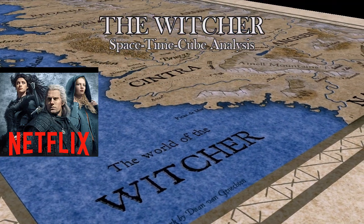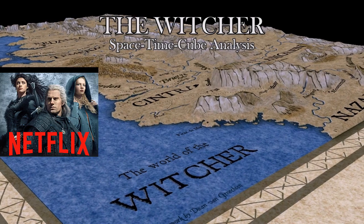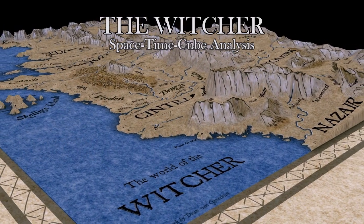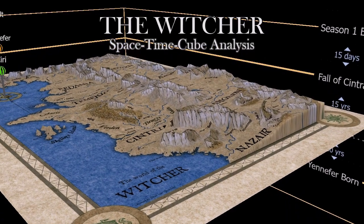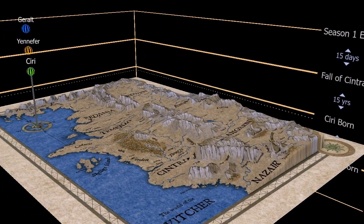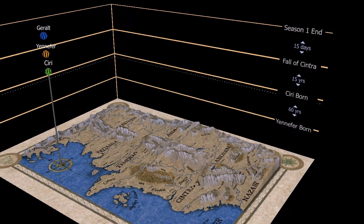Season 1 of The Witcher famously confused people by having the characters travel along different timelines. With Season 2 coming soon, I figured analyzing and displaying these timelines in a space-time cube where the up-down direction is time would show where and when everyone was in the first 8 episodes. Be warned, this is 100% spoilers.